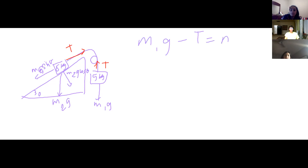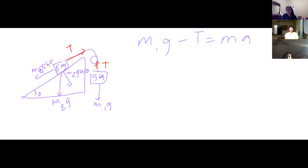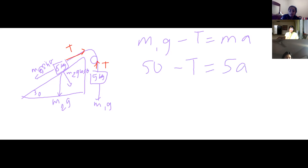Since we know m1 is going down, we put m1·g minus T equals m·a. So m1·g is 50, so: 50 minus T equals 5a. We can set this up and then do the same for the other block.